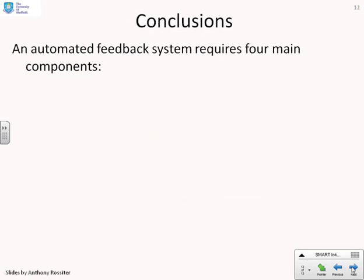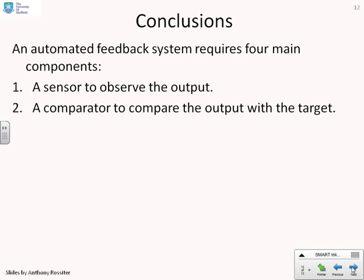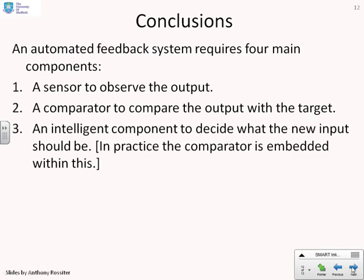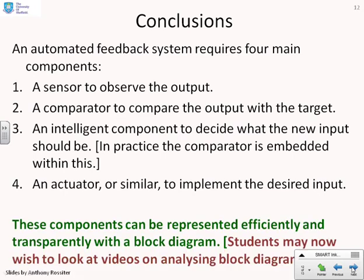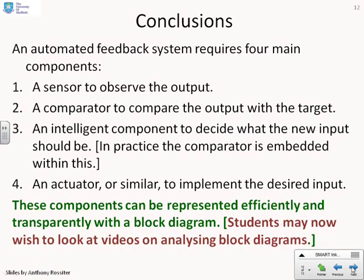Conclusions. The automated feedback system requires four main components. You need a sensor to observe the output. You need a comparator which compares the output with the target and that's often called the summing junction. You need an intelligent component which needs to decide what the new input should be. In practice the comparator is embedded within this but usually we represent it just as the error signal going into some transfer function K. The intelligent component is usually reduced to a simple transfer function K. And finally we need an actuator or something similar to implement the desired input on the process. In practice these components can be represented efficiently and transparently with a block diagram. You'll notice we reduced it to a very simple form of block diagram, so students might wish to look at the videos on analyzing block diagrams before they continue with this set of videos.